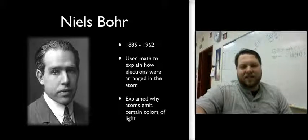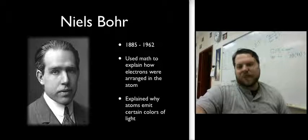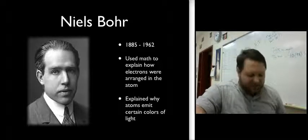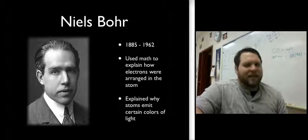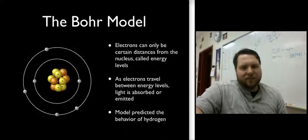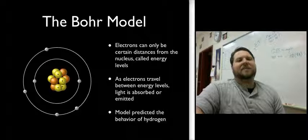And using the evidence of the fact that certain atoms give off certain colors of light, he came up with a couple theories as to why that is. And the one that he settled on, we now call the Bohr model of the atom.